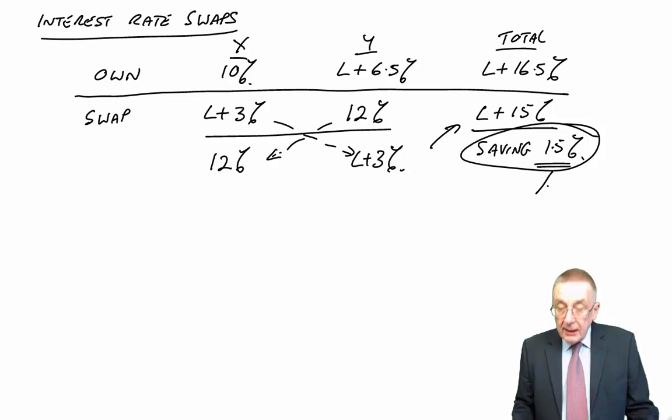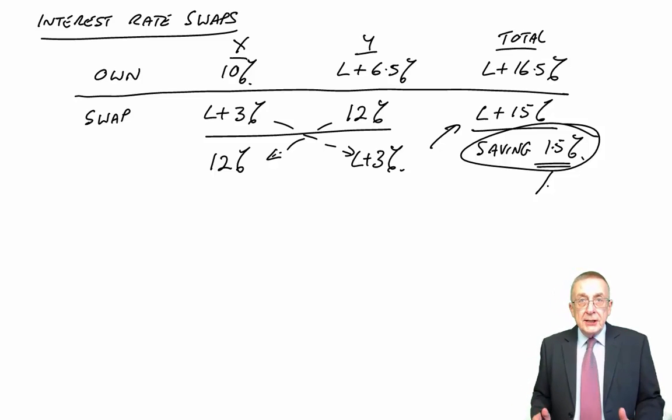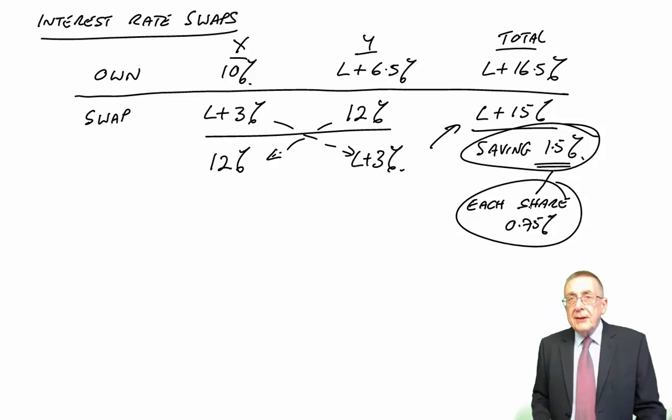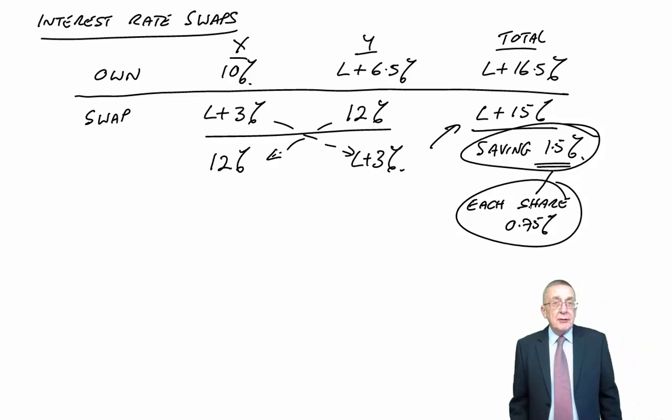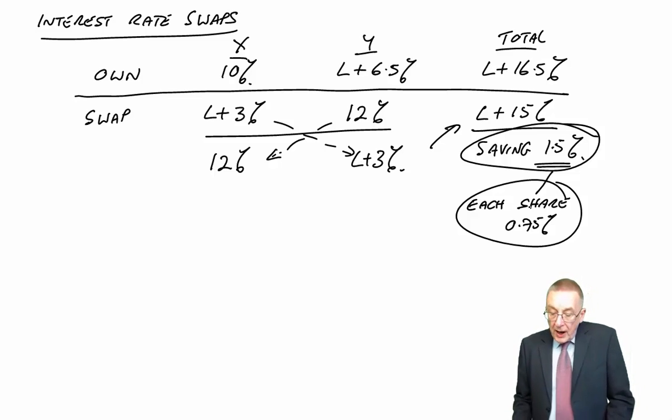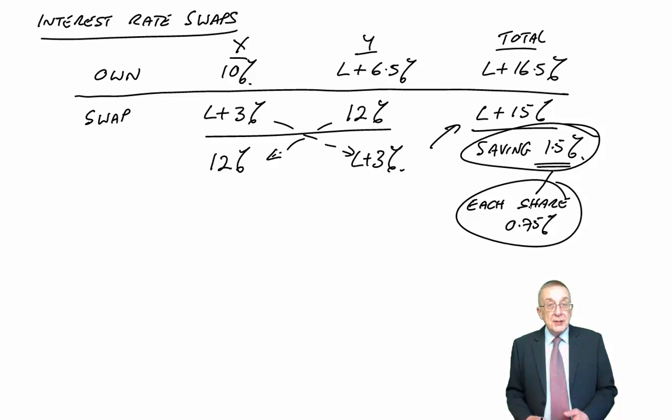There is a saving to be made, but if we stop where we are, Y is saving 3.5%, X is losing 2%, and so we'll share the saving between them. There's 1.5% to be made in total. If we assume that they agree to share that saving equally, then they'll each share half of that 0.75%. And in the exam, assume that unless you're told differently. If you were told X was going to get 80% of the saving, and Y 20%, no problem. But since the question said nothing different, we'll assume we want them both to save the same.